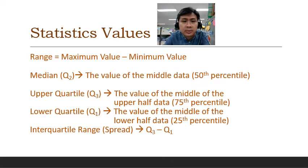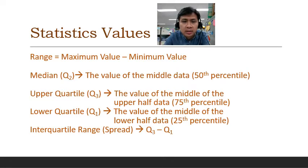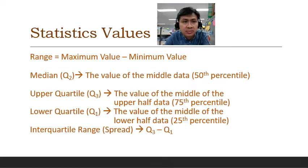Now let's look at some statistical values used in calculations for both discrete and continuous data. The first is the range, which refers to the maximum value of the data subtract the minimum value of the data. We'll take a look at an example later.